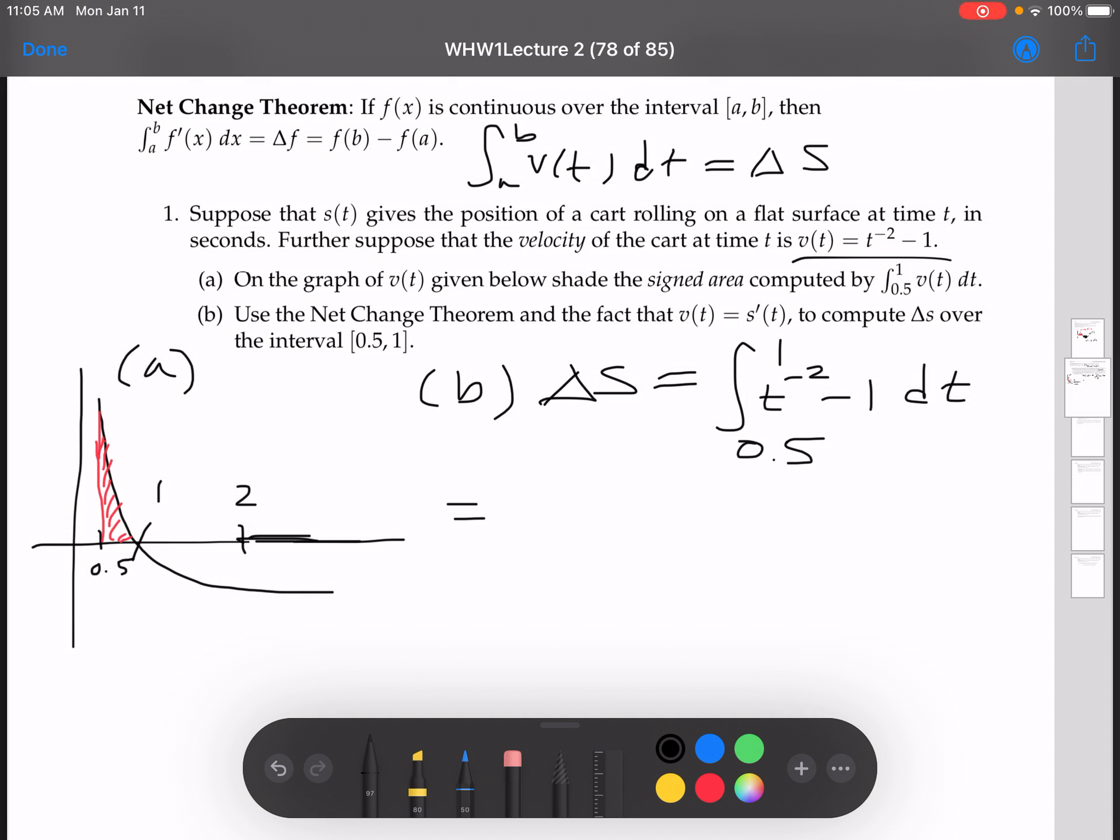So remember our antiderivatives. The antiderivative of t to the negative 2. So you have the variable raised to an exponent, we can use the power rule. So add 1, divide by that amount. So this is t to the negative 2 plus 1. Negative 2 plus 1 is negative 1. Divide by that amount, negative 1. The antiderivative of 1 is t. We're going to evaluate from 0.5 to 1.